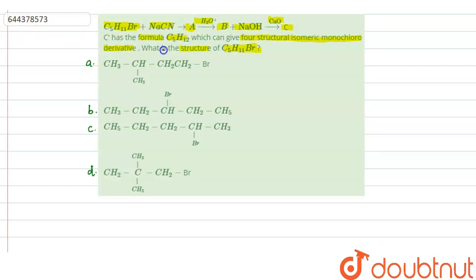In this question, we have to find out the structure of C5H11Br, which is the reactant in this sequence of reaction. And here we are given C having the molecular formula C5H12, and it can give 4 structural isomeric monochloro derivative. Now, basically for finding the structure of C5H11Br, there is no need to solve this equation. Because here we have already given the formula of C that is C5H12, which is the final product here. But let us see the reaction.